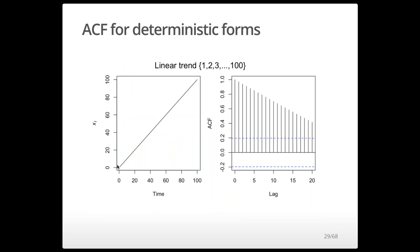It's informative to examine the ACF for some deterministic functions. Here is a simple linear trend — a time series going from 1 to 100, just a straight line. Its ACF is 1 at lag 0 and remains very high out to lag 20 with significant autocorrelation, which makes sense: it's a straight line, so observation 1 is related to 2, which is related to 3, et cetera.